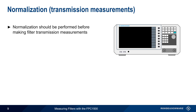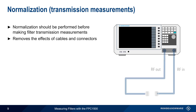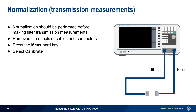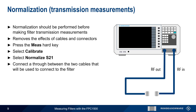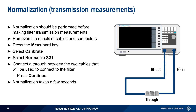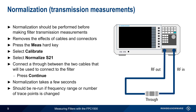A very important part of any transmission measurement is normalization, and this should be performed before making any filter measurements. Normalization can remove or reduce the effects of cables and connectors on the measurements. To run normalization, press the Measure hard key, select Calibrate, and then Normalize S21. A through should be connected between the cables that will be attached to the filter. After pressing Continue, normalization will complete in a few seconds. For the best accuracy, normalization should be rerun if the frequency range or number of trace points has been changed.